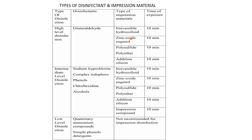The disinfection protocol is: wash the impression first, dry it, then spray the solution and let it dry for 10 minutes, then place it in a plastic bag or pour it. For intermediate level disinfection, agents include sodium hypochlorite, iodophores, phenols, chlorhexidine, and alcohol — same exposure time of 10 minutes: wash, dry, and spray. Impression compounds, used for edentulous primary impressions, also follow the same protocol.